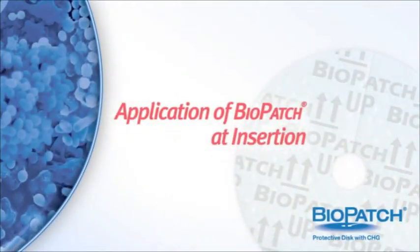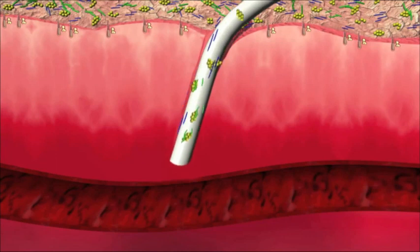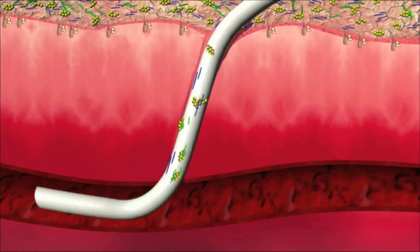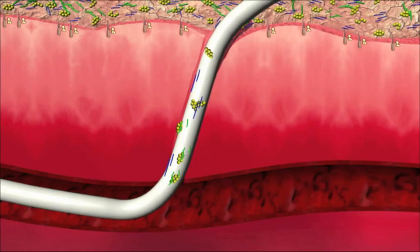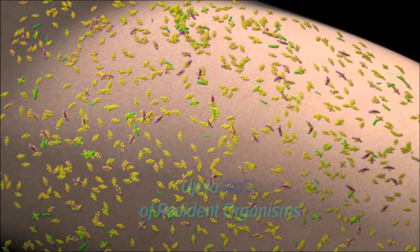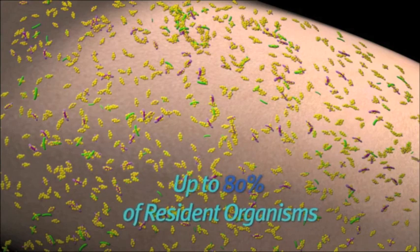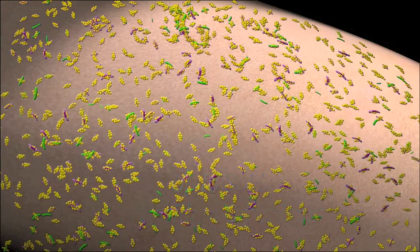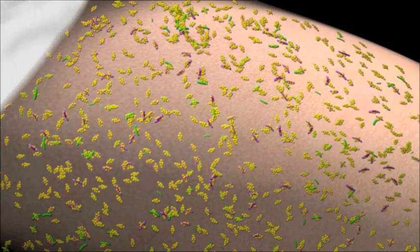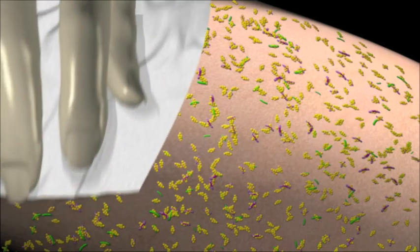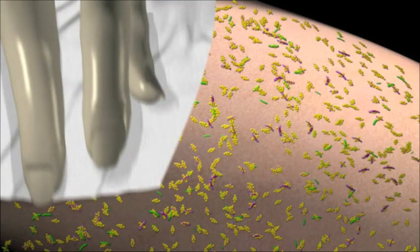Application of BioPatch: Some bacteria will invariably attach to the catheter surface as it passes through the skin layers, hair follicles, and sebaceous glands. All surface transient and resident organisms, and up to 80% of the resident organisms in the stratum corneum, can be removed by properly preparing the skin before insertion. Be sure to cleanse the skin surface.